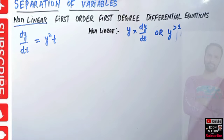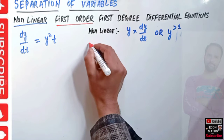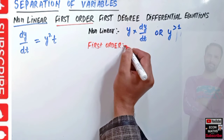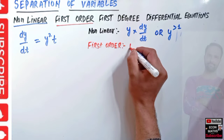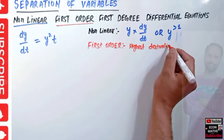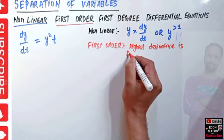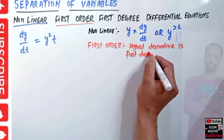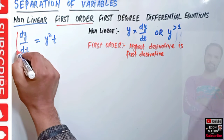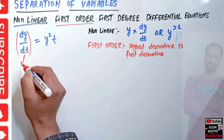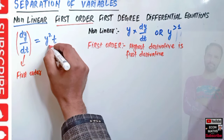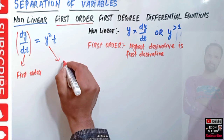Now we have first order. By first order, what we mean is that the highest derivative is the first derivative. Here the highest derivative is dy/dt, and it is the first derivative only, so we say this is of first order.